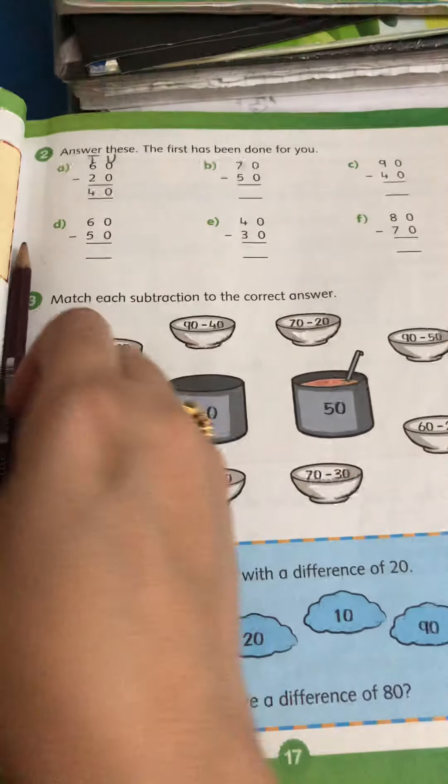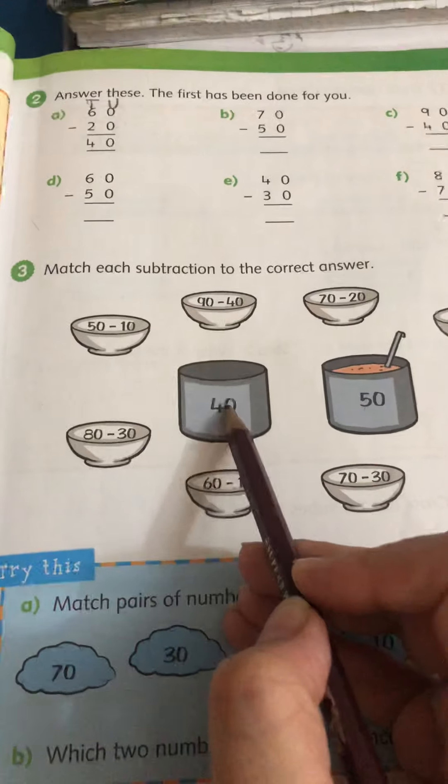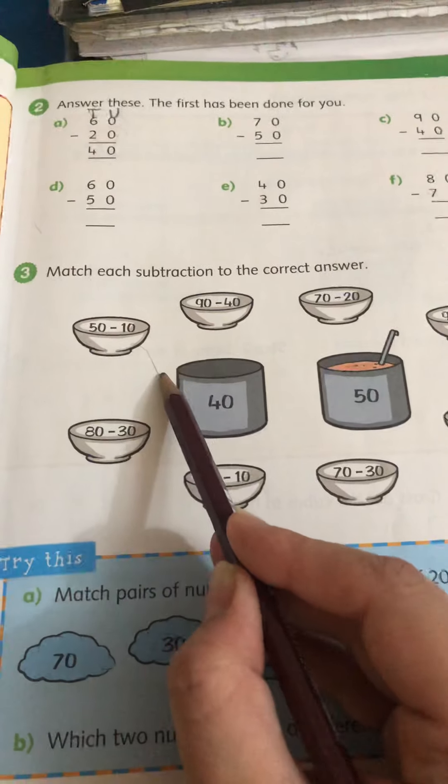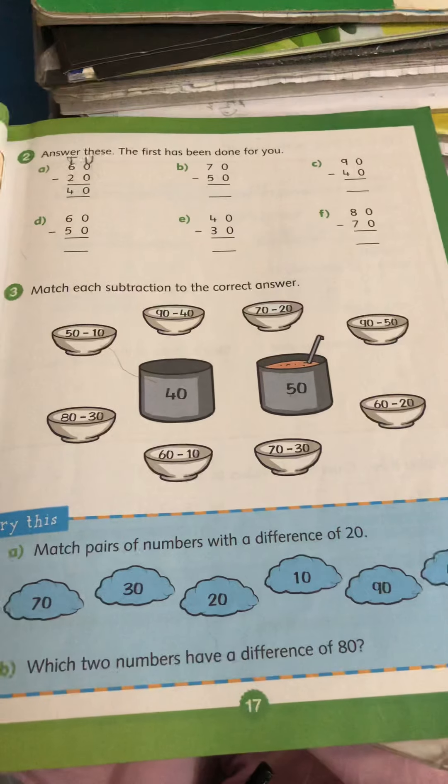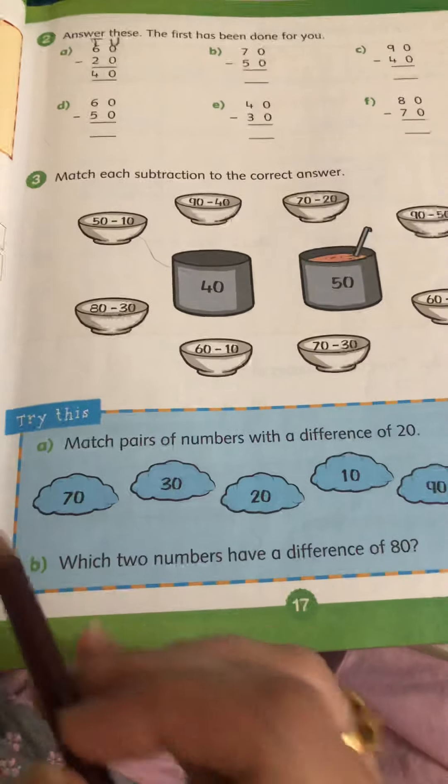So 4 tens is 40. So this is the answer. I am going to match it like this. I would really appreciate if you guys match, do the matching with the colored pencils.